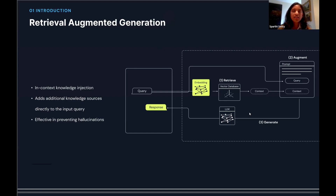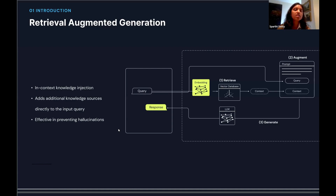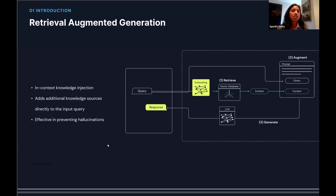Now I'll explain what RAG — retrieval augmented generation — actually is. If you've ever used a chatbot, for a question like 'What is the capital of France?' it knows from inherent knowledge that it might be Paris. But some questions require specific context. When you need to answer questions on a document, you can paste the passage directly into the prompt. But if you want to answer questions where the context spans 50 or 100 page documents, you need retrieval augmented generation.